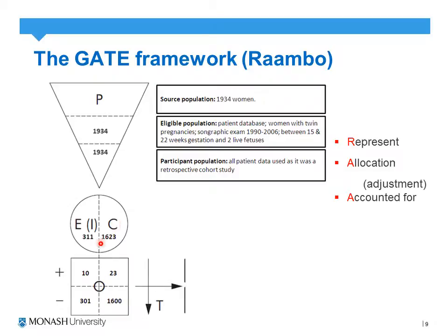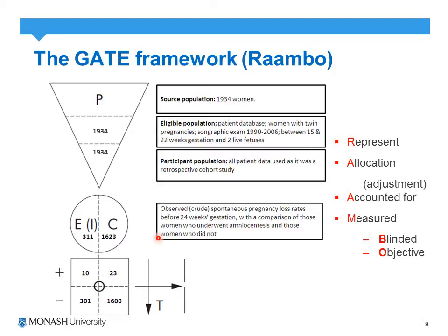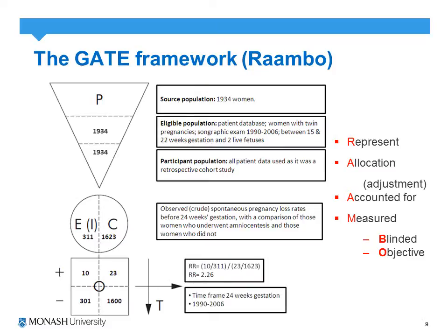We can identify where they were accounted for, or assess the risk of attrition bias, by breaking it down into a 2x2 table. From the 2x2 table, we can identify that 10 out of the 311 patients in the exposed group had the outcome, as opposed to 23 out of 1623 participants in the control group. We can account for withdrawals or drop-outs at various levels. The final aspect is the measurement — what measures were implemented and were they blinded and objective in any way.